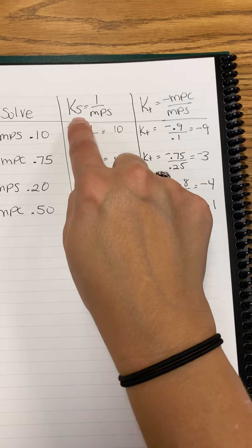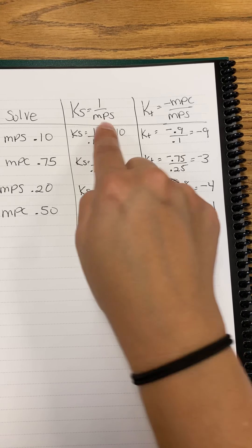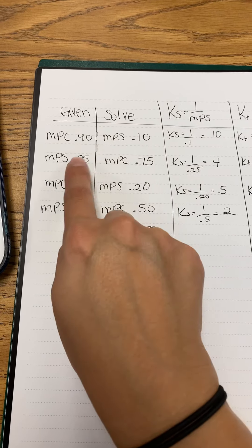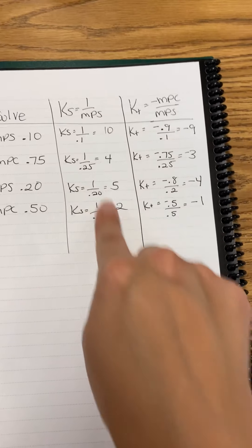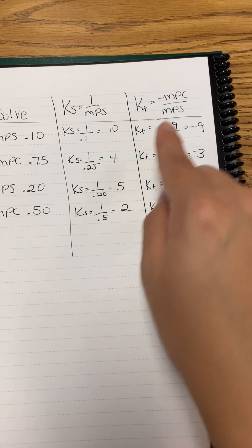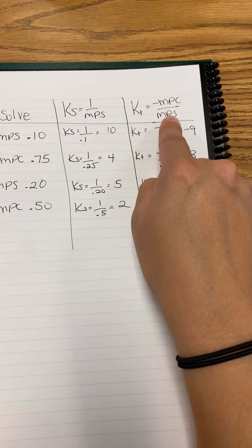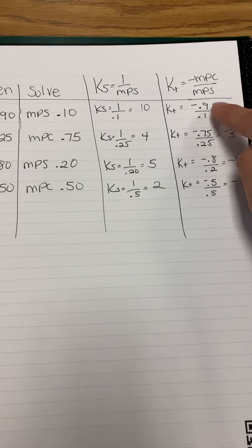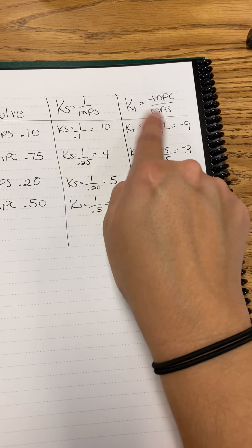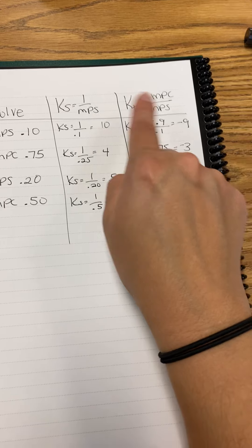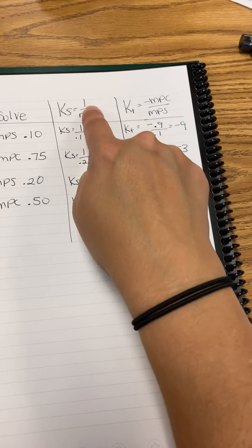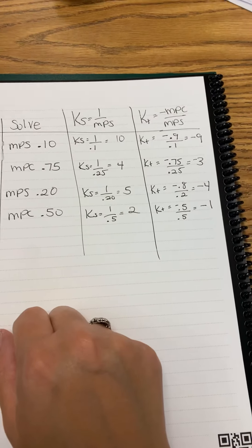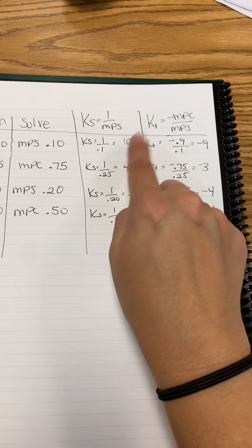And here are the formulas. For the spending multiplier, it's 1 over MPS. For the tax multiplier, the equation is different. It's negative MPC over MPS. So you actually need both of these numbers. Notice how MPS is on the denominator for both KS and KT. So MPS is always on the denominator. Sometimes it's 1 on the numerator if you're talking about KS. Sometimes it's negative MPC if you're talking about KT. But notice the relationship between KS and KT.